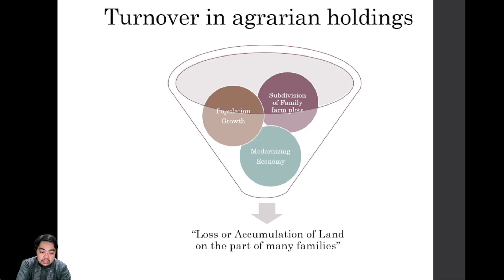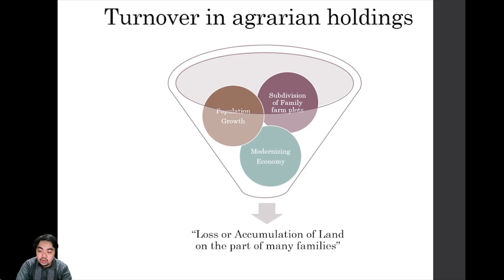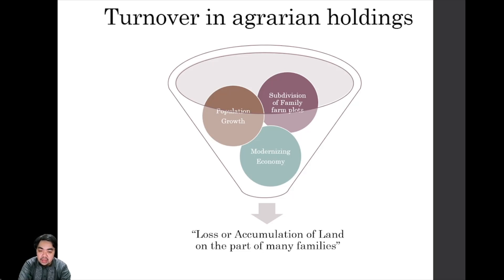Once the galleon trade became more of a liability than an asset for the Spanish empire, Spanish administrators — most notably Governor José Basco — decided to pursue different schemes to make the Philippines commercially viable so the colony could sustain itself rather than rely on the obsolescence of the galleon trade. Because of this modernizing economy, we see the rise of major industries, even noted by popular culture at that time.